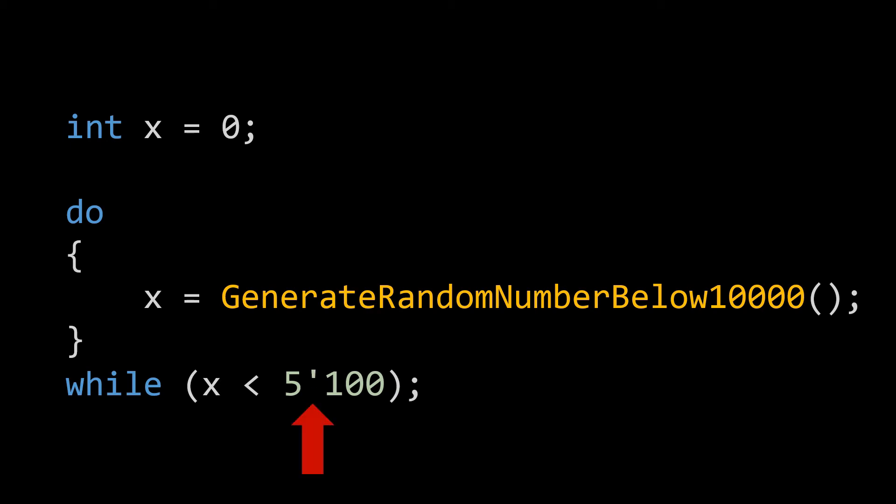To correct this, what somebody would have to do to delineate that this number is greater than 999 and has 4 digits would be to use a single quote instead of a comma.